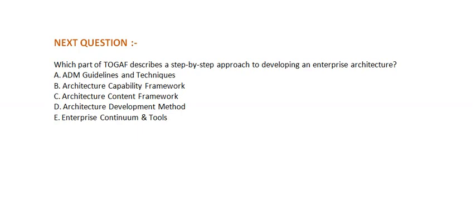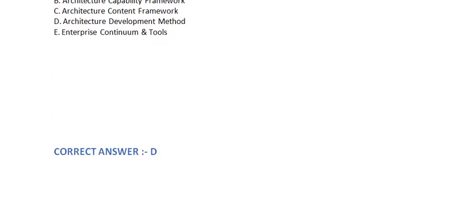Which part of TOGAF describes a step-by-step approach to developing an enterprise architecture? Option A: ADM Guidelines. Option B: Architecture Capability Framework. Option C: Architecture Content Framework. Option D: Architecture Development Method. Option E: Enterprise Continuum and Tools. The correct answer is Option D.